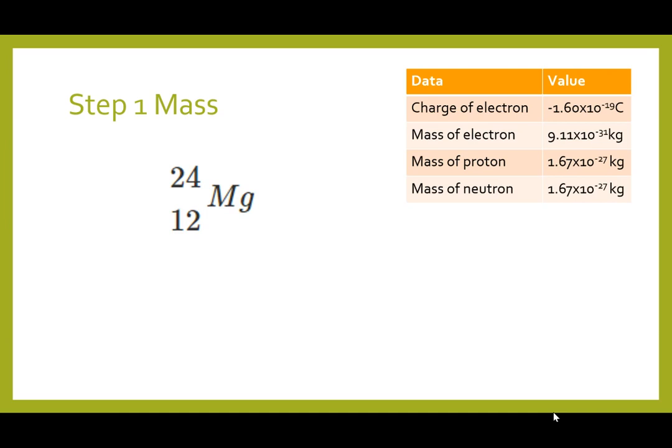And because we're taking the mass of the protons and the mass of the neutrons to be identical, we can just multiply it by 24. If you want to do it more exactly, you're going to have to work out the number of protons and the number of neutrons by subtracting the mass number and the atomic number and then do the multiplication with the different numbers. But in our case, we're taking the mass number and multiplying it by the mass of the proton slash neutron. And that gives us a mass of 4.01 times 10 to the minus 26 kilograms.